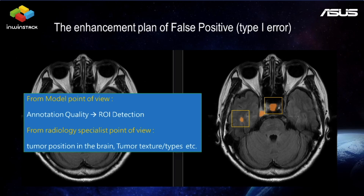Sometimes mistakes happen during labeling by the doctors, and maybe we can redesign our model for better results. But from the radiologist specialist's point of view, they may say we can check the position of the tumor in the brain, or check whether the tumor texture or type is correct — is it a tumor or not? This is the most important thing we want to share today: when we add the methodology of the specialist's point of view, the noise can be easily reduced by this kind of methodology.